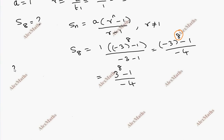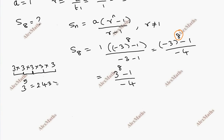Now computing (minus 3) to the power 8: that is 3 × 3 × 3 × 3 × 3 × 3 × 3 × 3, which gives 6561.